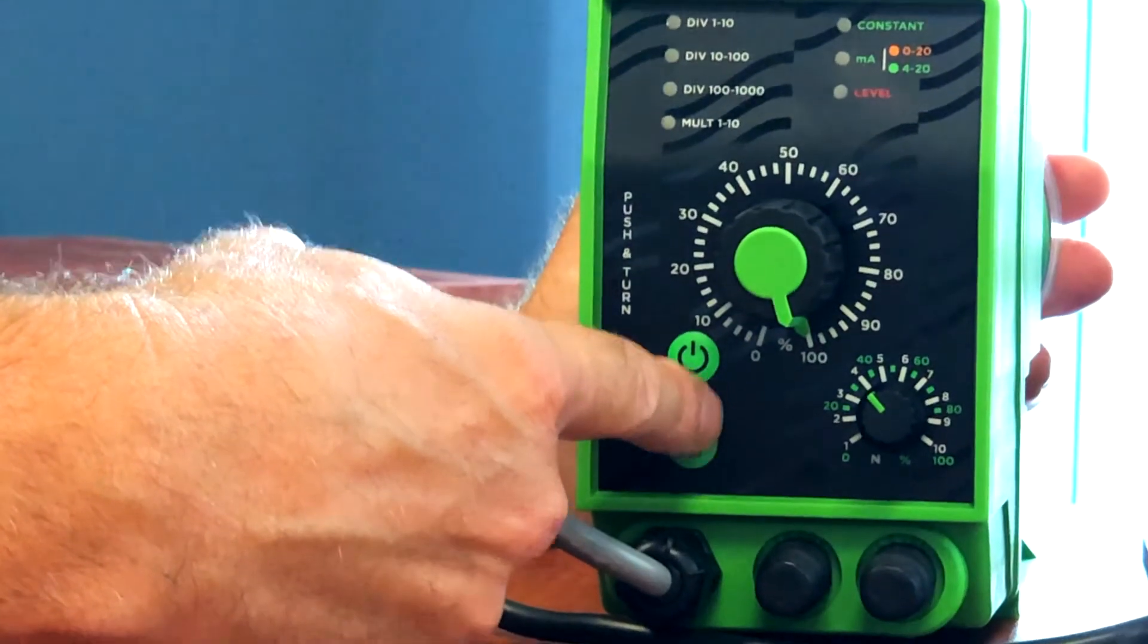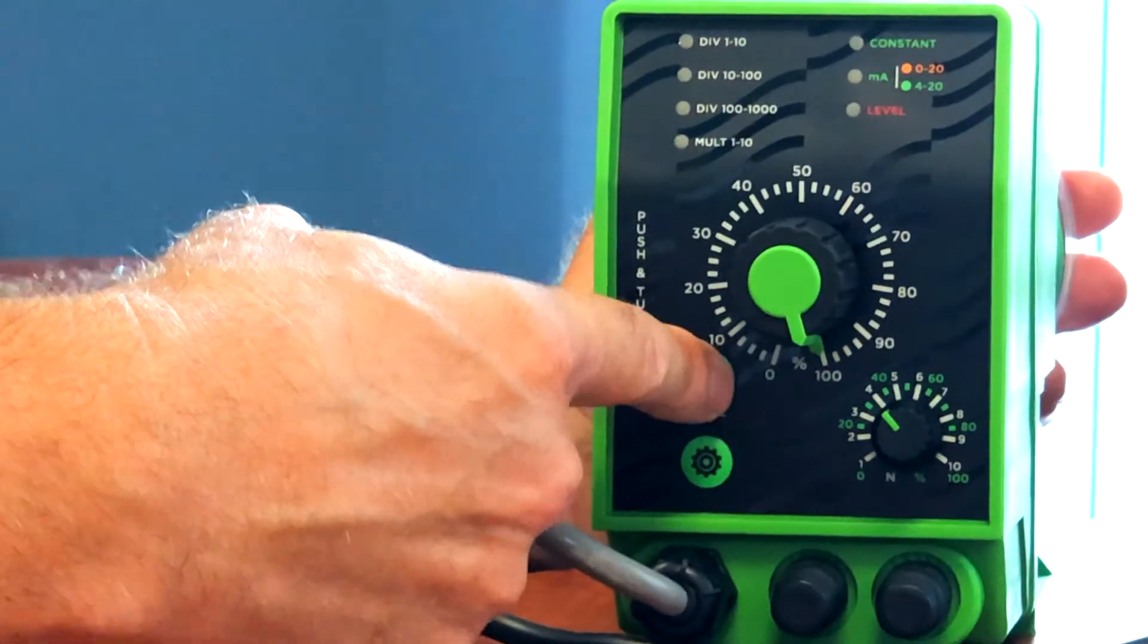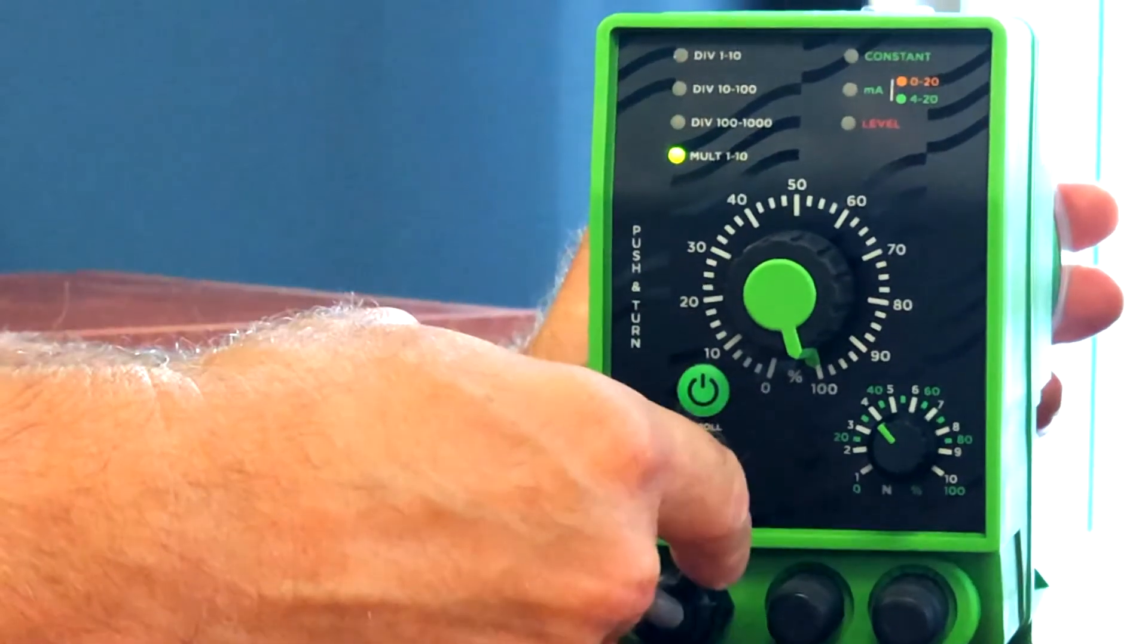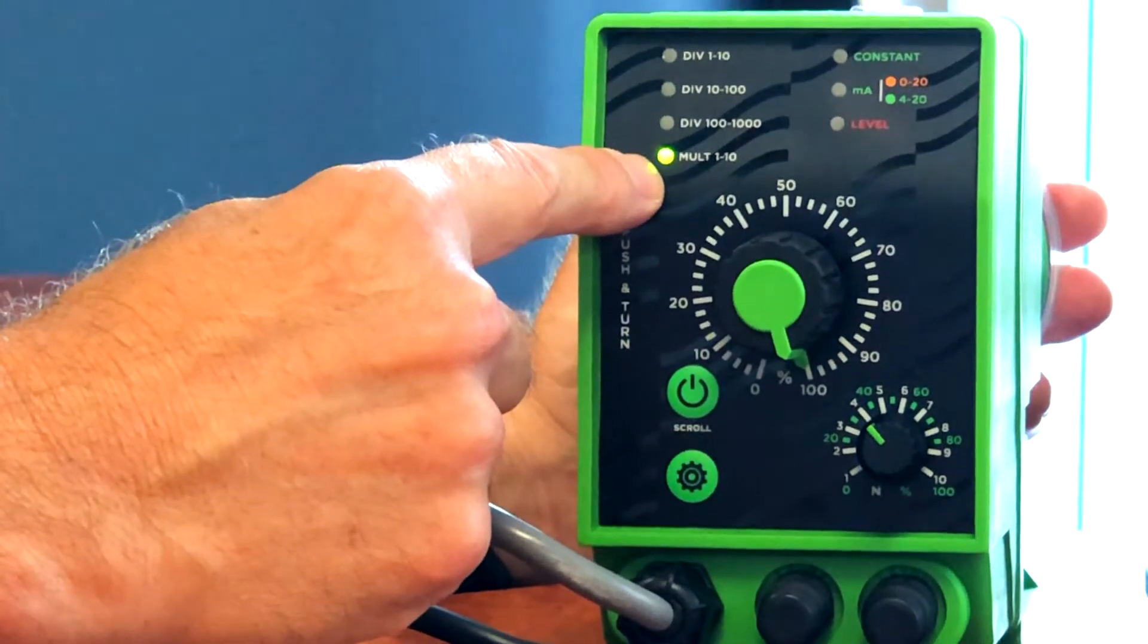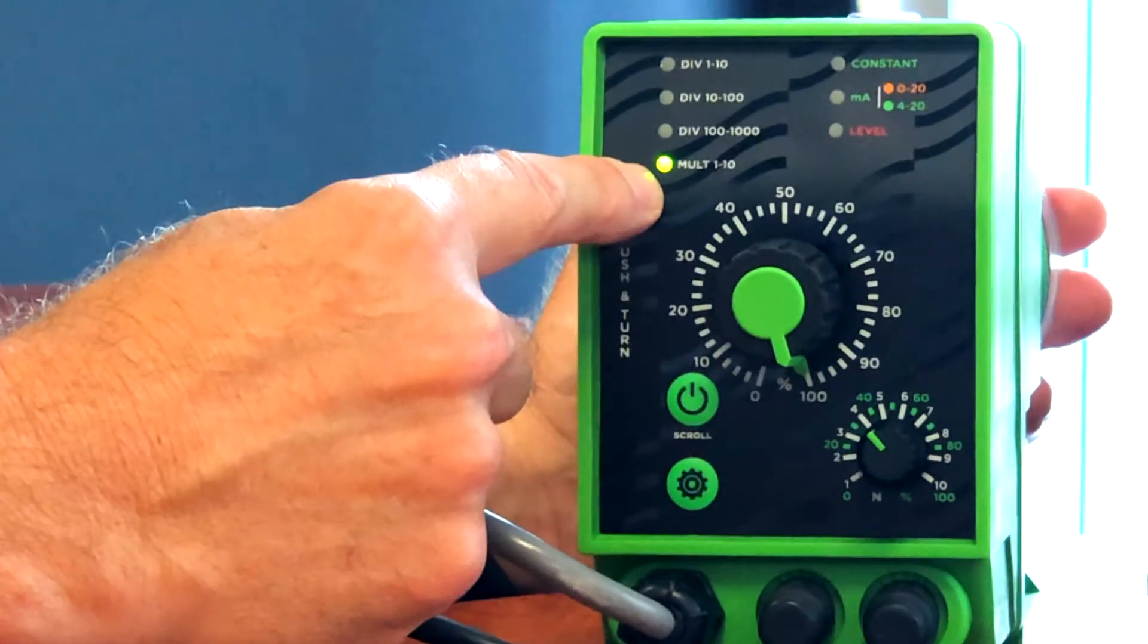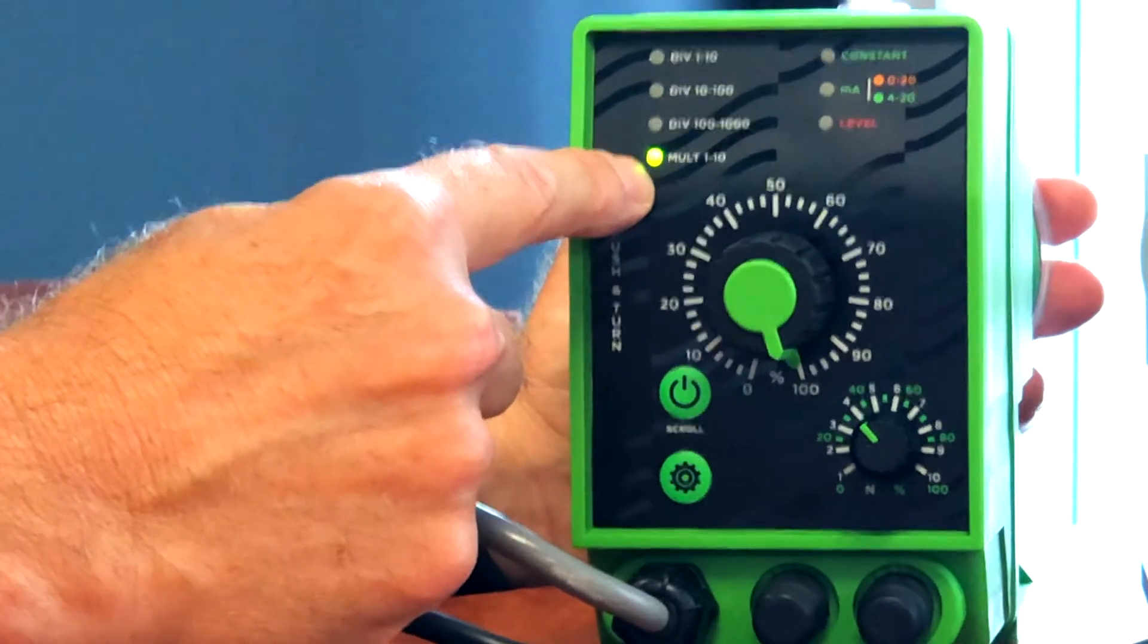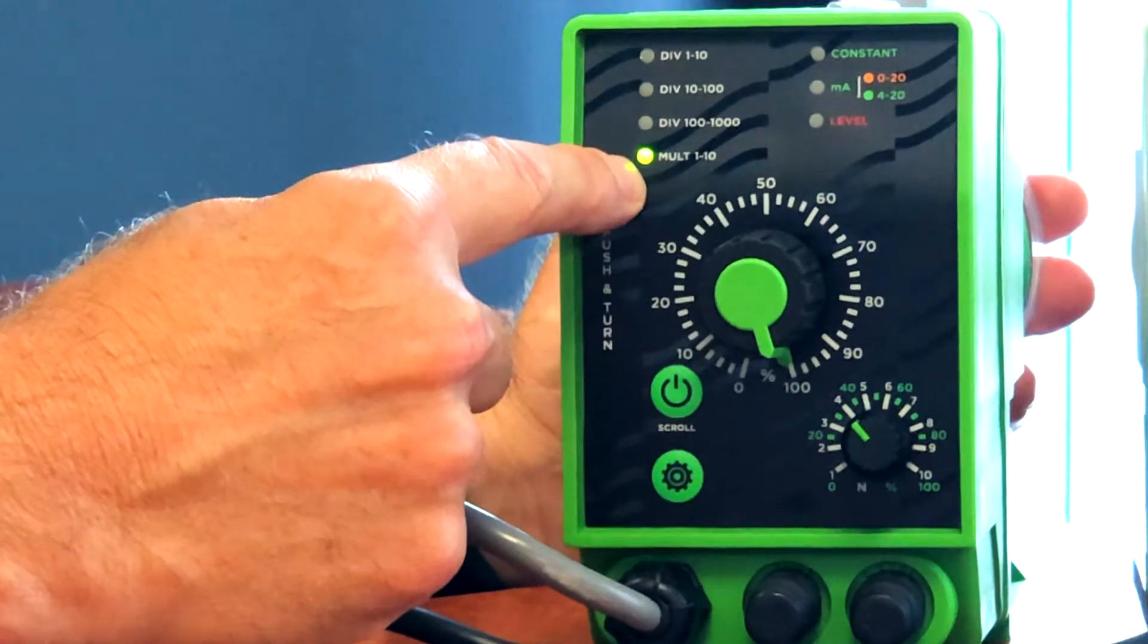And then we put the pump back on by pressing the power button, which takes it out of standby. And as you can see now, the LED is on solid in multiply 1 to 10. And then when the pump receives an external pulse, it will stroke and start pumping.